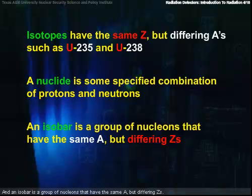An isobar is a group of nuclides that have the same mass number but differing atomic numbers.